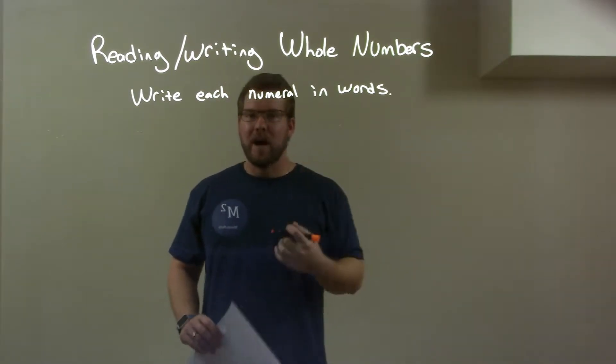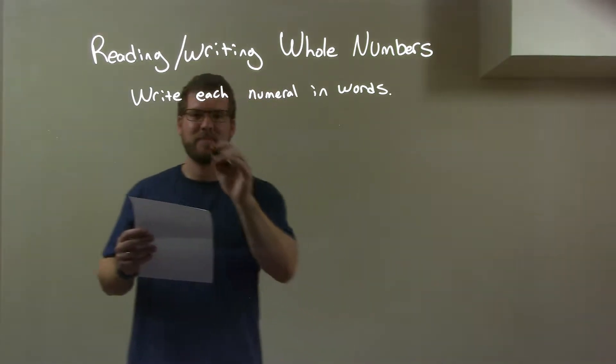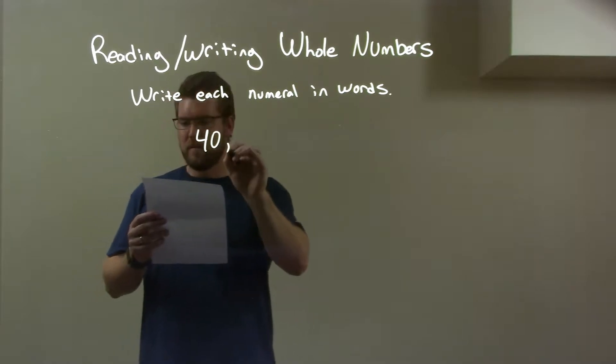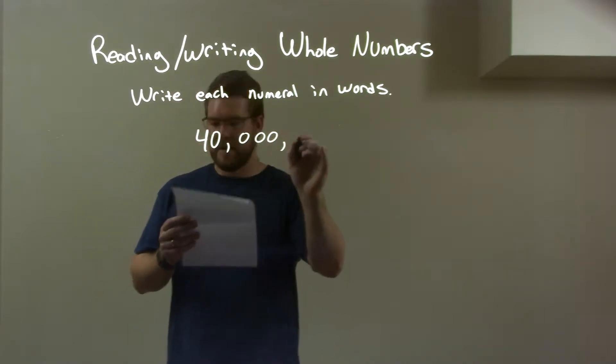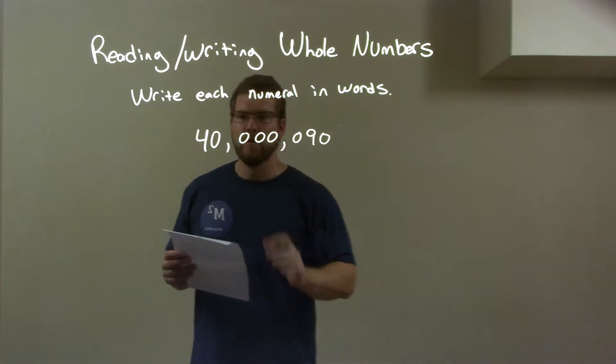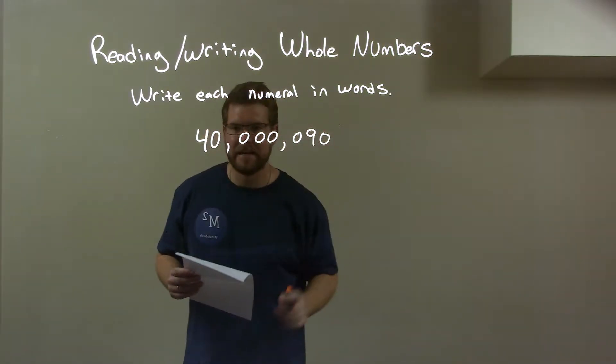If I was given this number, we have 40 million and 90. So we have 40 million 90.